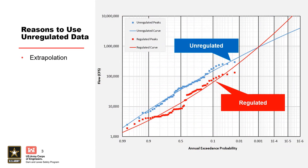A prerequisite for performing flood hazard analysis is obtaining an unregulated inflow period of record dataset. Many locations have upstream regulation, which can significantly affect annual maximum flows and volumes. Many locations also have relatively short record lengths, which means that volume frequency curves need to be extrapolated to rare annual exceedance probabilities for risk assessments.